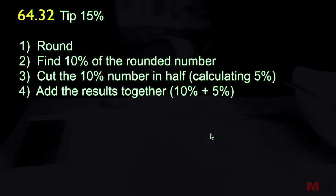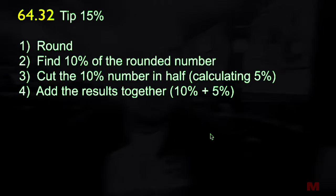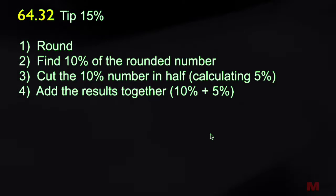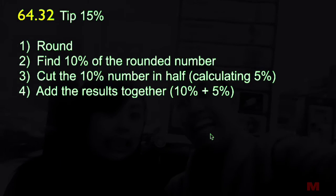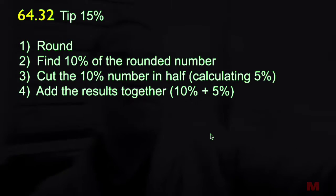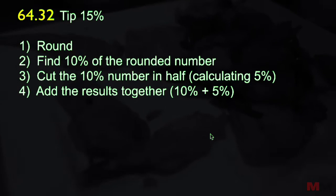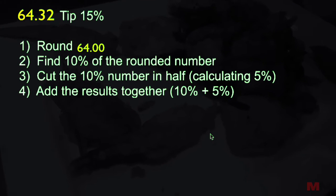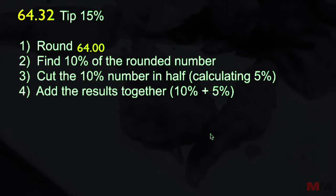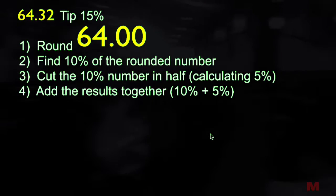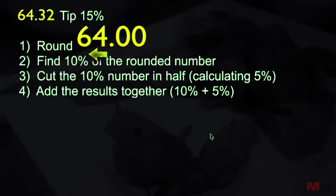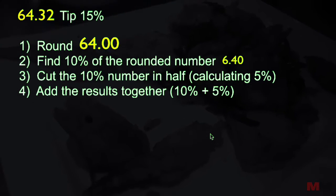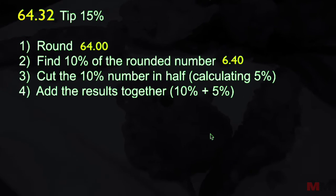Let's say you feel a little cheap and didn't get good service, so you only want to tip 15%. Our bill is $64.32 — you can still do this in your head. Step one: round to the nearest dollar, so $64.32 rounds to $64. Step two: find 10% of that rounded number — move the decimal one place to the left — it's just $6.40.